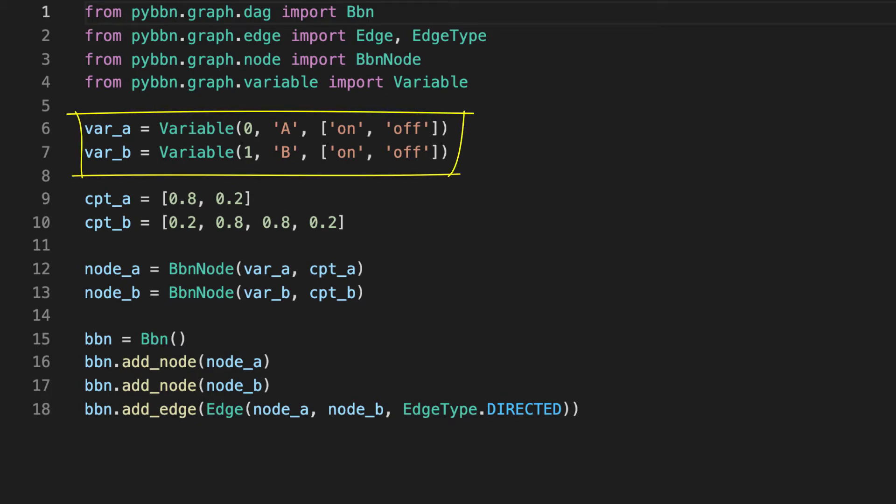Before I can create a node, I create two variable instances to represent the variables. I then create the conditional probabilities associated with each node. The probabilities for A is simple, as it is simply a vector describing the probabilities of the two states. The conditional probability for B needs some explaining.